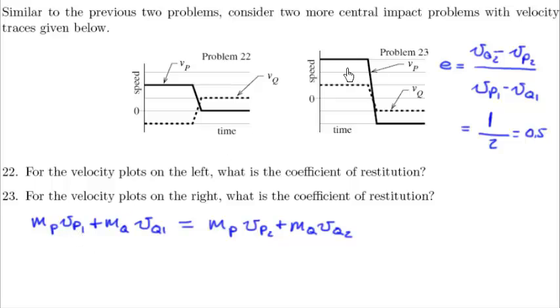So vp1, that looks, what'd I say, 1, 2, 3. So we've got 3 mp, and then we have 1 mq. This has to equal, after impact, I've got minus 2 mp. So vp is at minus 2. Minus 2 mp. And then I have minus 1 mq.